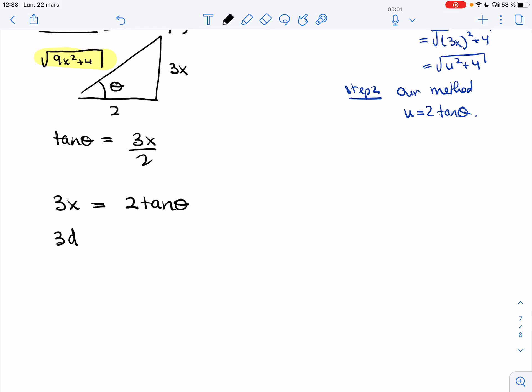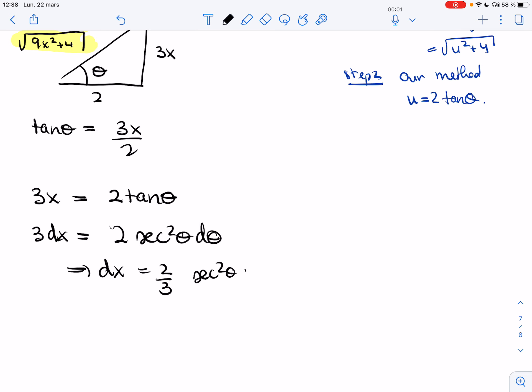That means that 3dx is 2 secant square theta d theta. And so dx is 2 thirds secant square theta d theta.